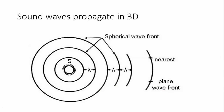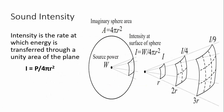Sound intensity is the rate at which energy is transferred through a unit area of a plane. Whenever we talk about a rate, we're talking about power — energy per unit of time. This relates to the area of a sphere: 4πr².